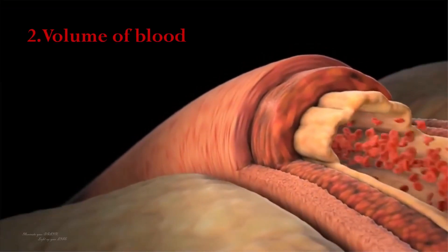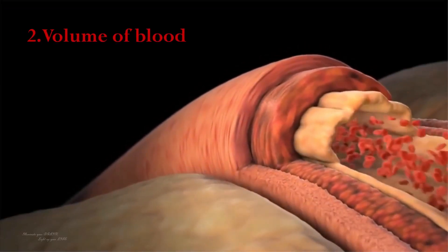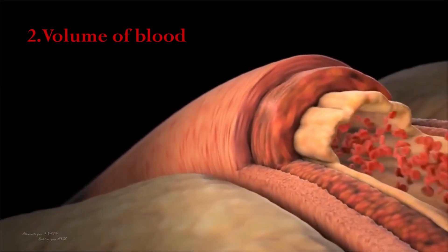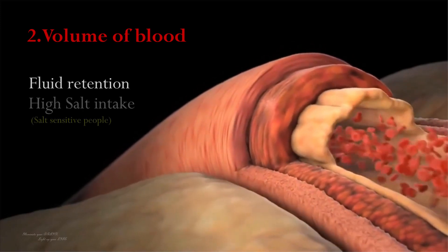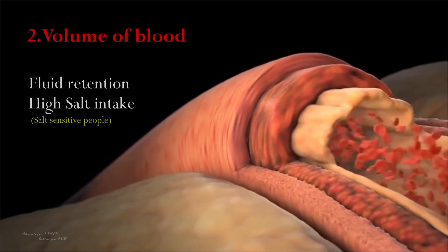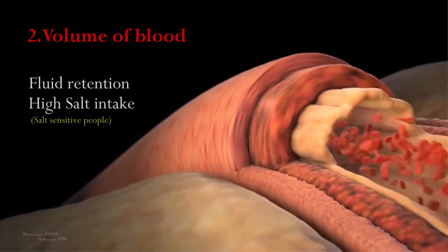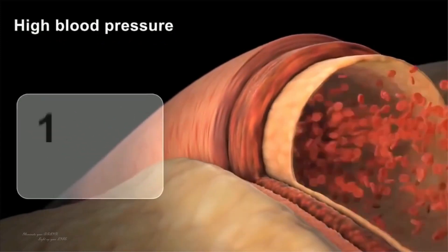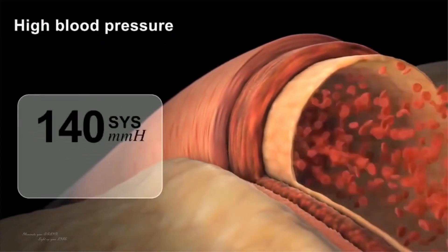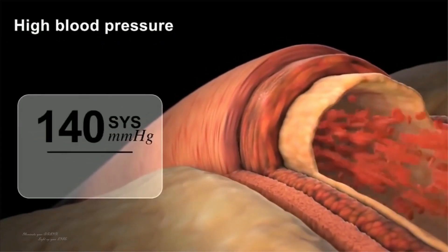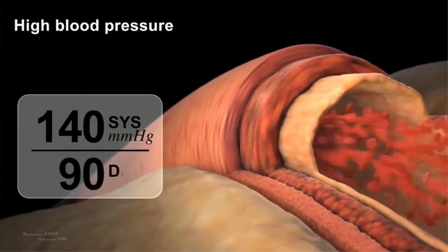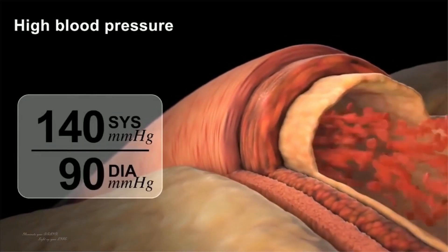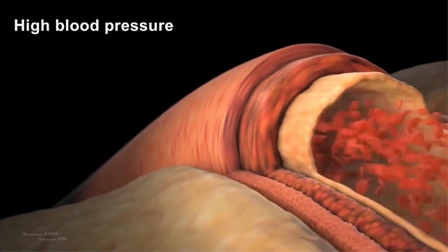When blood volume increases in conditions like fluid retention or excessive salt intake, the pressure on the blood vessel walls increases, resulting in higher blood pressure. Conversely, a decrease in blood volume, such as from dehydration or bleeding, can lead to lower blood pressure.